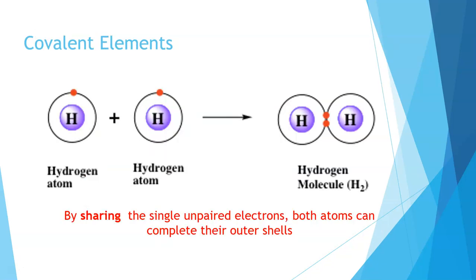When we share unpaired electrons, both atoms can complete their outer shells. So what they're doing is they are aiming to have a complete octet. Now, with hydrogen, of course, it is stable with two electrons in its outer shell, so hydrogen forms a stable diatomic molecule.